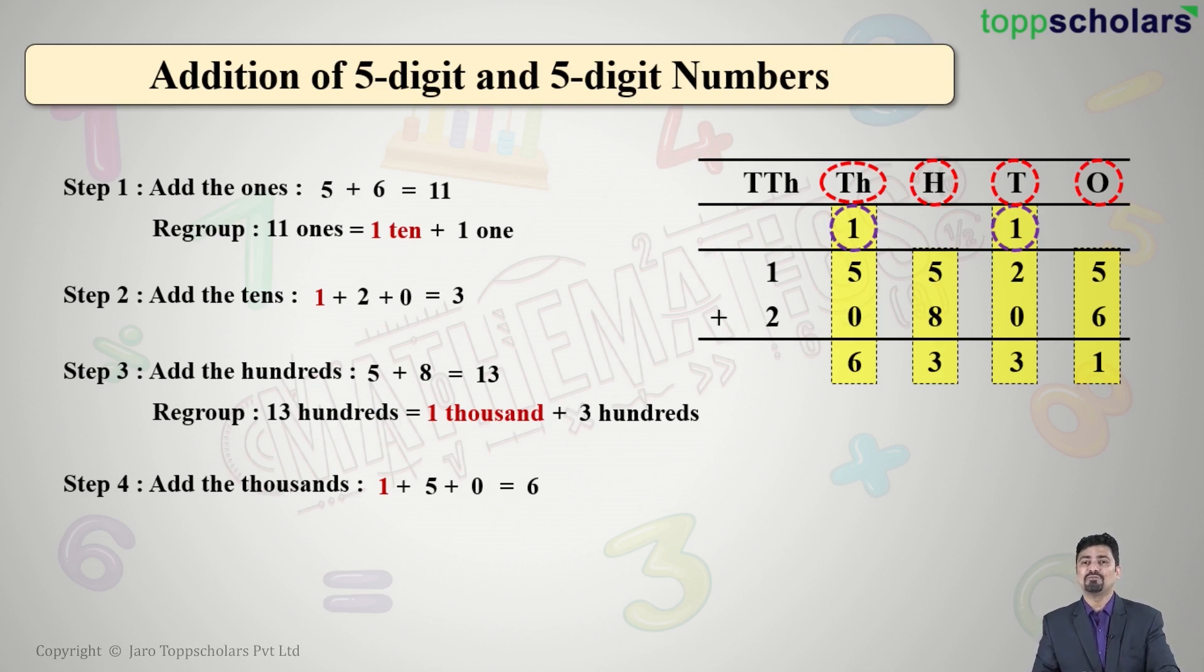In ten thousands, we have 1 + 2. The answer is 3. So our final answer of the amount deposited by the student in the bank is 36,331.